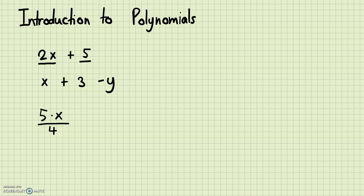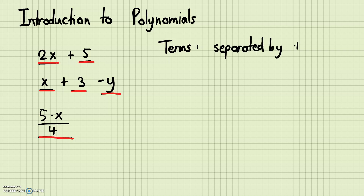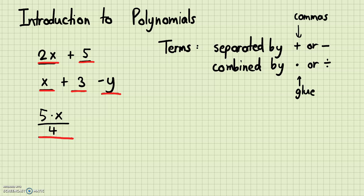They have different terms — different parts inside the expression. How do we differentiate the terms? Terms are separated by addition or subtraction, and they are combined by multiplication or division. Think of multiplication and division as the glue that sticks the numbers and the letters together, and think of addition and subtraction as commas — they separate the terms from each other.